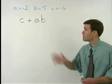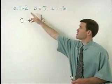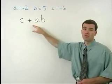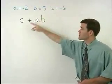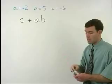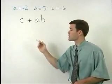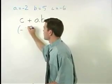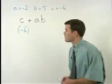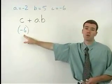So the first thing we want to do is substitute these numbers into our problem. Since C equals negative 6, we're going to replace this C with a negative 6. And as we do that, we're going to put that negative 6 in parentheses.